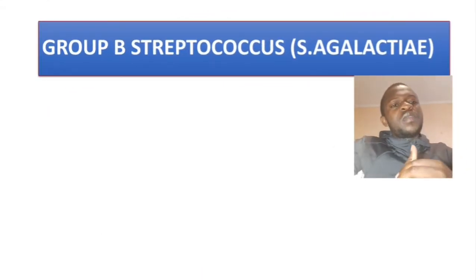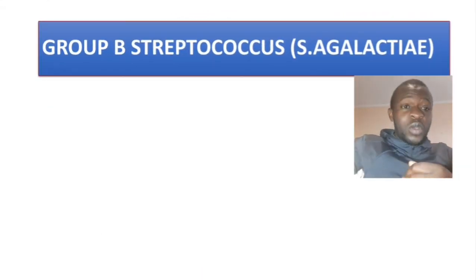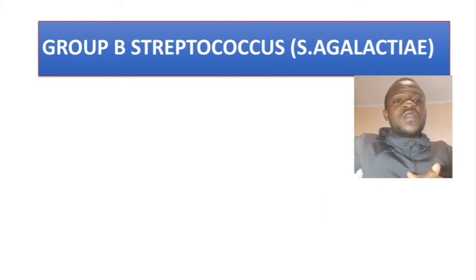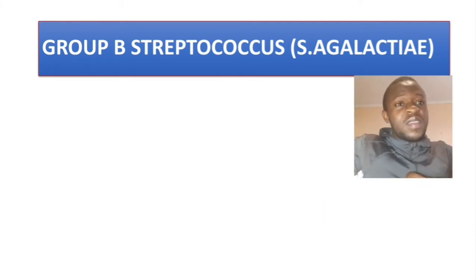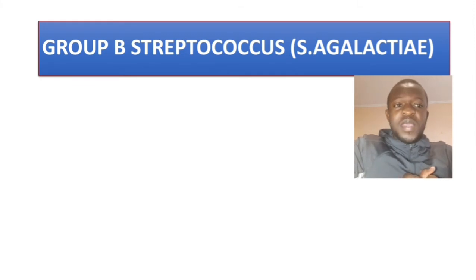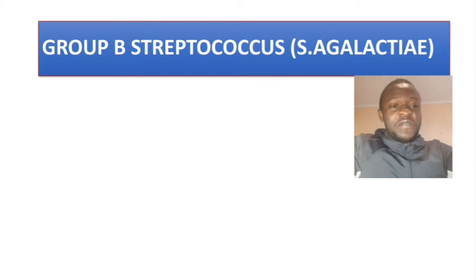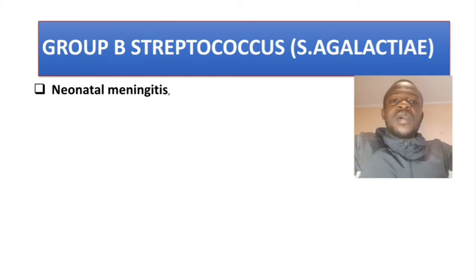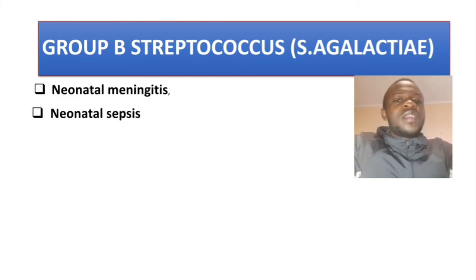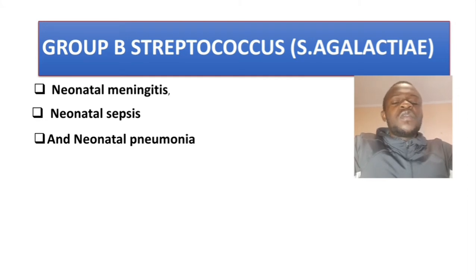Now let's talk about the conditions caused by Group B Streptococcus. As I said before, if you hear B, just think babies. Here I have three neonatal infections: neonatal meningitis, neonatal sepsis, and neonatal pneumonia.